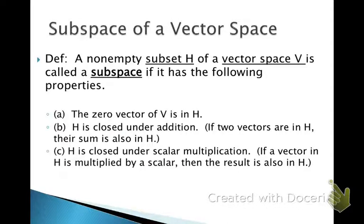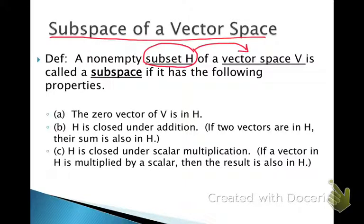Now let's talk about what a subspace of a vector space is. For a subset to be a subspace, it must belong to the vector space. The first property is that it has to be non-empty. It has to be a subset of the vector space. Then it is a subspace if it contains the zero vector, is closed under addition — meaning the sum of any two vectors in H still belongs to H — and is closed under scalar multiplication, meaning any scalar multiple of an element in H still belongs to H.